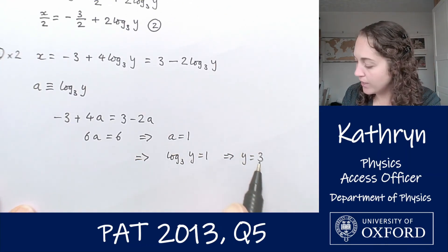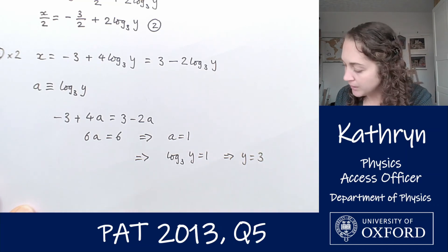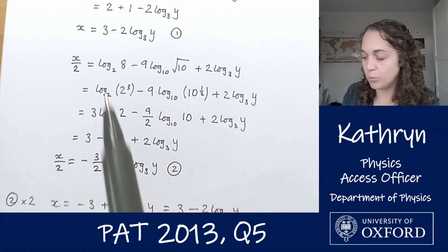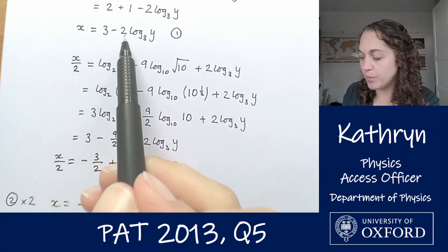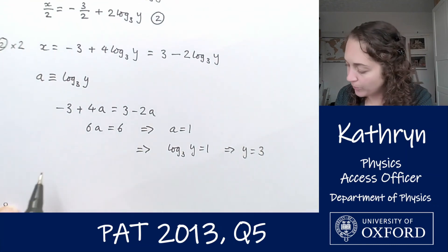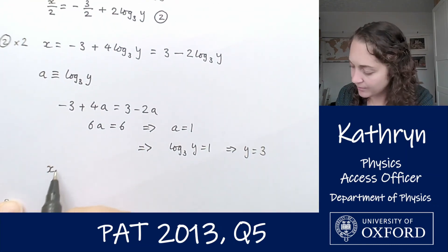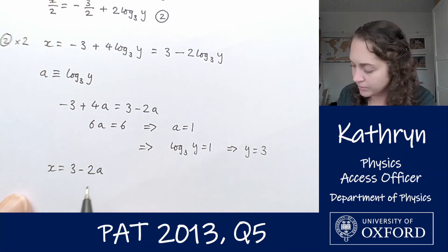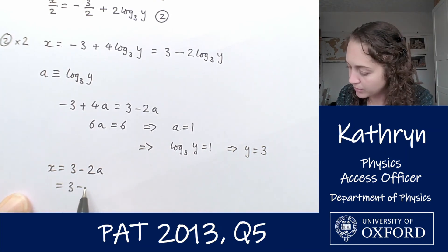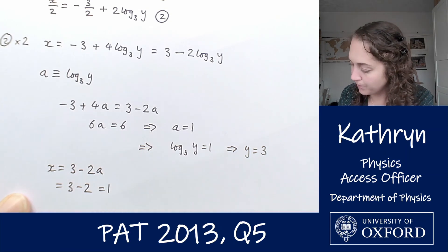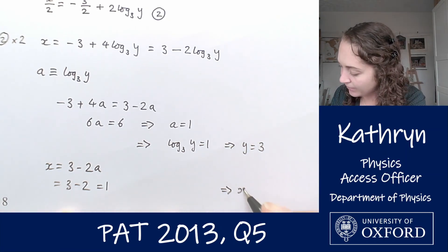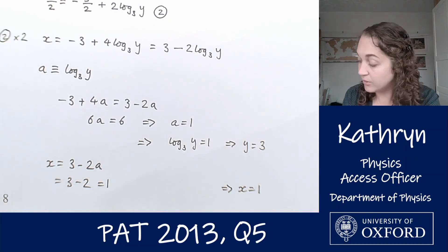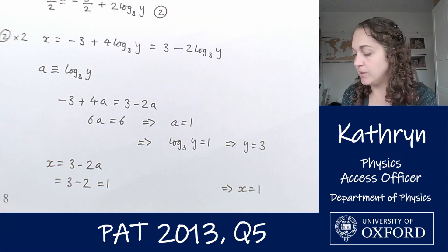We now know that y is 3 or that a is 1, so we can re-substitute that back into any of our equations. Let's re-substitute it into equation 1, which is that x equals 3 minus 2a. We know that a is 1, so that equals 3 minus 2, which is just 1. So x equals 1.